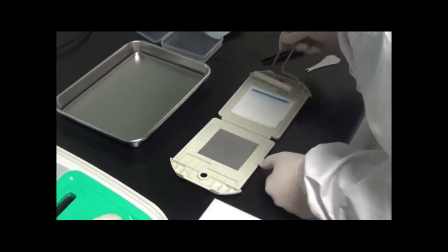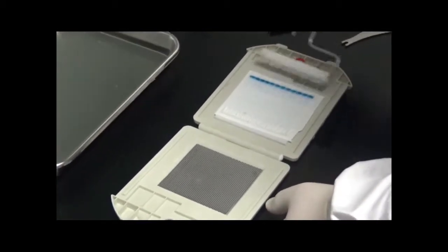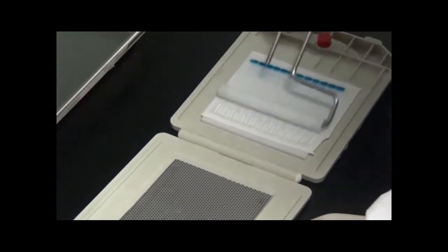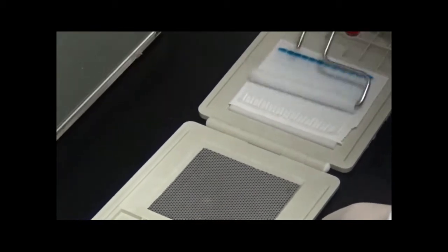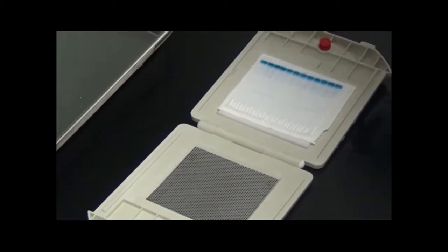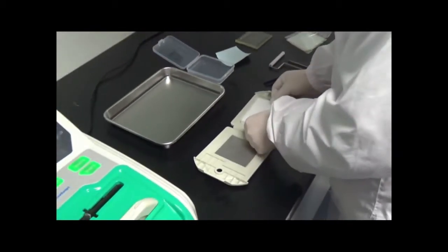Remove any air bubbles that may be trapped between the gel and the membrane by using the roller. Lastly, place the other dry sponge on top of the gel to complete your transfer sandwich.